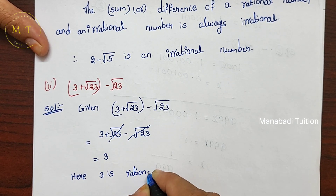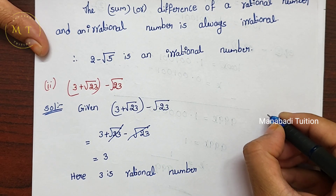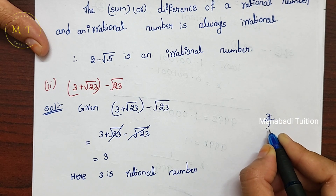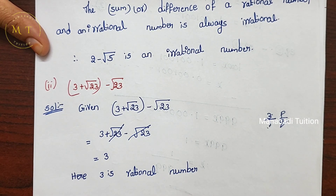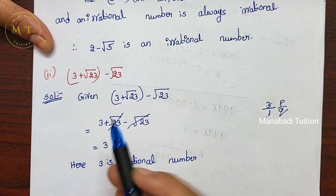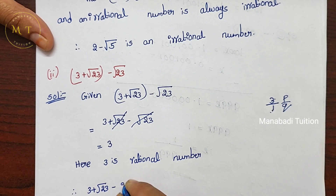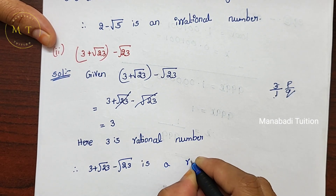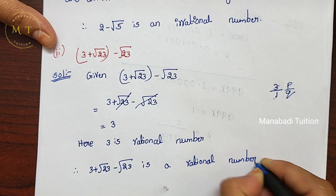So here 3 is a Rational number. The number 3 is in P by Q form, which is the fraction formula. So the total value is a Rational number. Therefore, 3 plus root 23 minus root 23 is a Rational number.